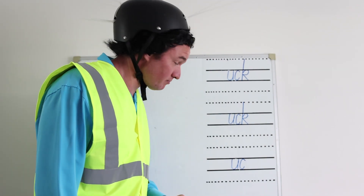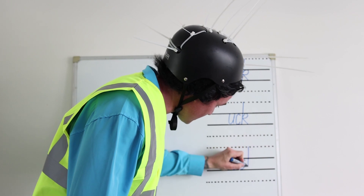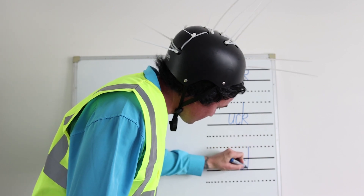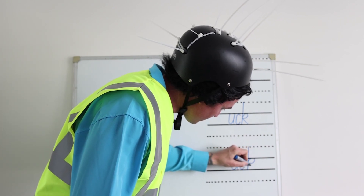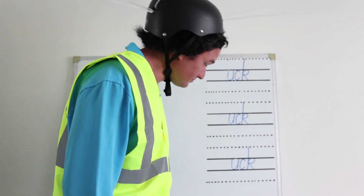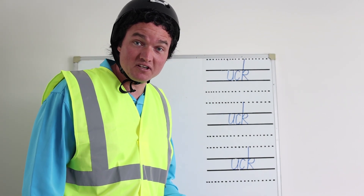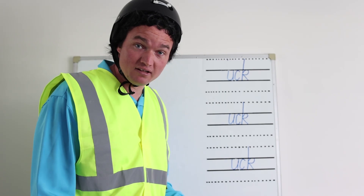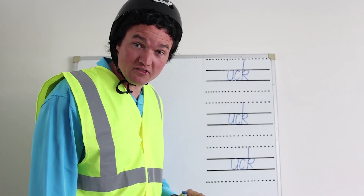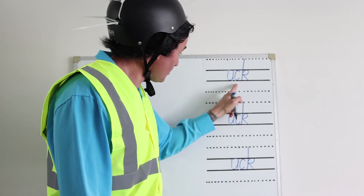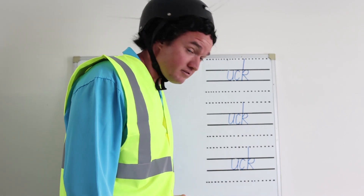One more time. We start up here, go down, follow the line up, curve around, and down. The letter K also makes the K sound. And together, the CK can make the K sound.